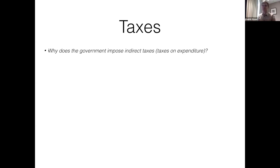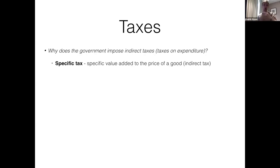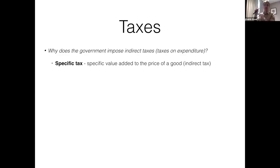Now, how can the government impose these taxes? They can impose them through what we call a specific tax. A specific tax is essentially where the government says you add this specific value to the price of any good. Suppose a pack of cigarettes costs $5 — the government says this is going to have an additional tax of $2. So some specific value — $2, $3 — whatever it is, that's added to the price of the good. That's what we would call a specific tax.